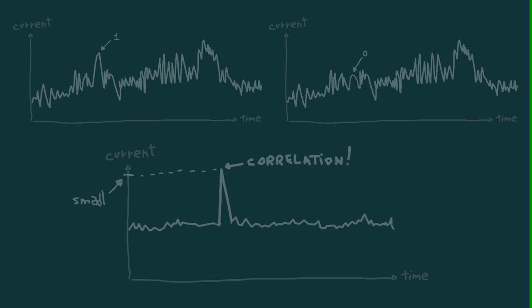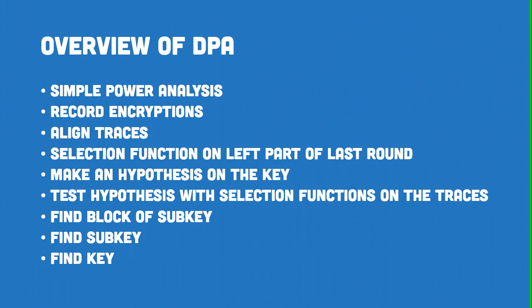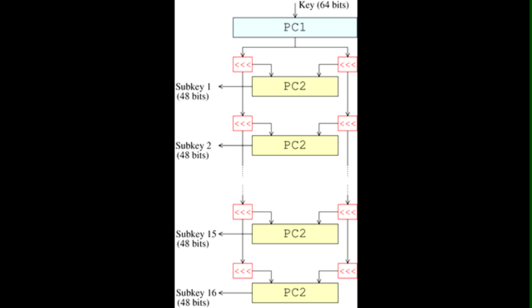Once we have correctly guessed the six bits of the last round subkey, we can repeat the entire process with a different bit in the selection function, feeding it a new block of the last round subkey to try to guess it. We do that again and again until we obtain all the different blocks of the last round subkey, giving us the complete last round subkey. Now, how do we get the master key from the last round subkey? In DES, the key schedule that creates all sixteen round keys is linear. That means that from just one round subkey, we can do some linear algebra and compute the original master key.